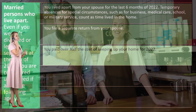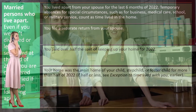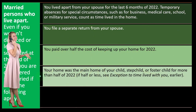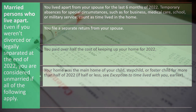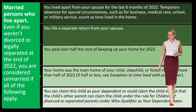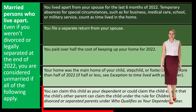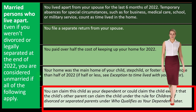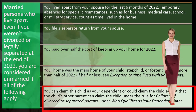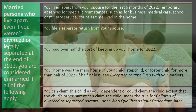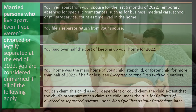Additional conditions to be considered unmarried: you paid over half the cost of keeping up your home for 2022; your home was the main home of your child, stepchild, or foster child for more than half of 2022 (if half or less, see the exception to time lived with you); and you can claim this child as your dependent — except that the child's other parent can claim the child under the rule for children of divorced or separated parents.